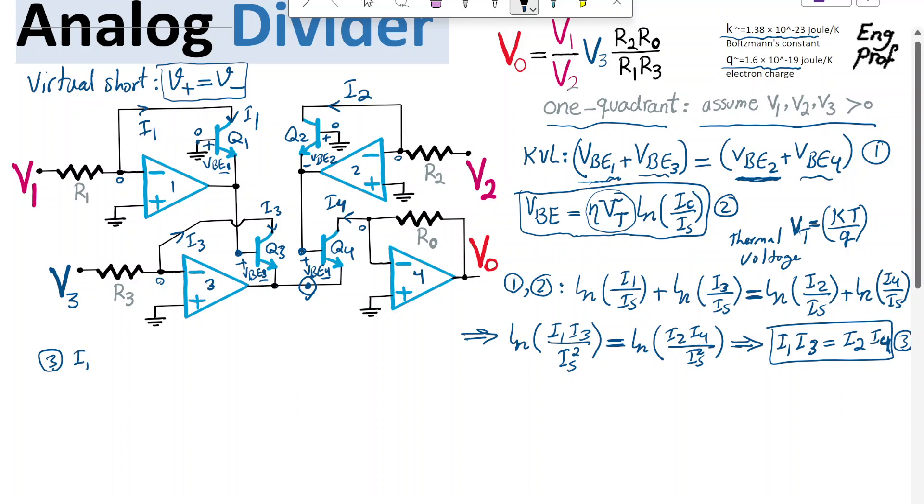from 3, I'm going to rewrite it here, or maybe I can just continue writing I3 here. Keep in mind that one interesting thing that equation 3 indicates is I4 is I1, I3 divided by I2, so effectively, the circuit is also a current multiplier, analog current multiplier, an analog current divider,